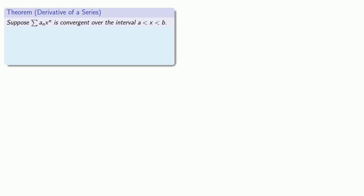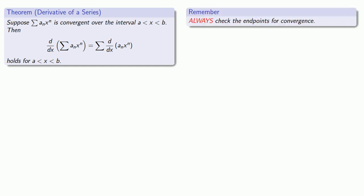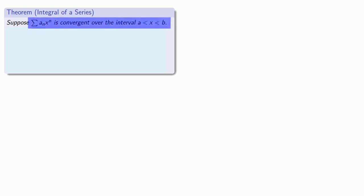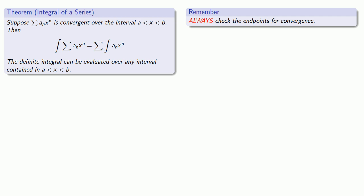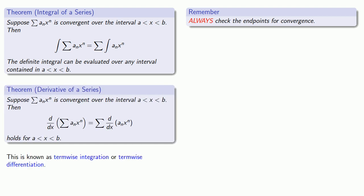Now, some calculus: suppose we have a convergent power series over some interval between a and b. Then the derivative of the power series is the series consisting of the derivative of each of the individual terms, at least in that interval between a and b. An important idea to keep in mind: we always need to check the endpoints for convergence. Similarly, the antiderivative of a convergent power series is the series whose terms are the antiderivatives of the individual terms. We always check the endpoints. Because we find the integral or derivative of a series by operating on individual terms, we call this term-wise integration or term-wise differentiation.